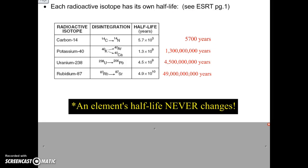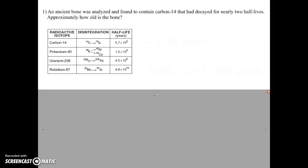So let's look at a couple of practice questions. Okay, question one. An ancient bone was found and analyzed and found to contain carbon-14 that had decayed for nearly two half-lives. They want to know how old the bone is. Well, we know that one half-life for carbon is 5,700 years. So if it has gone through two half-lives, it means it went through that two times. So 5,700 times two is going to equal 11,400 years.